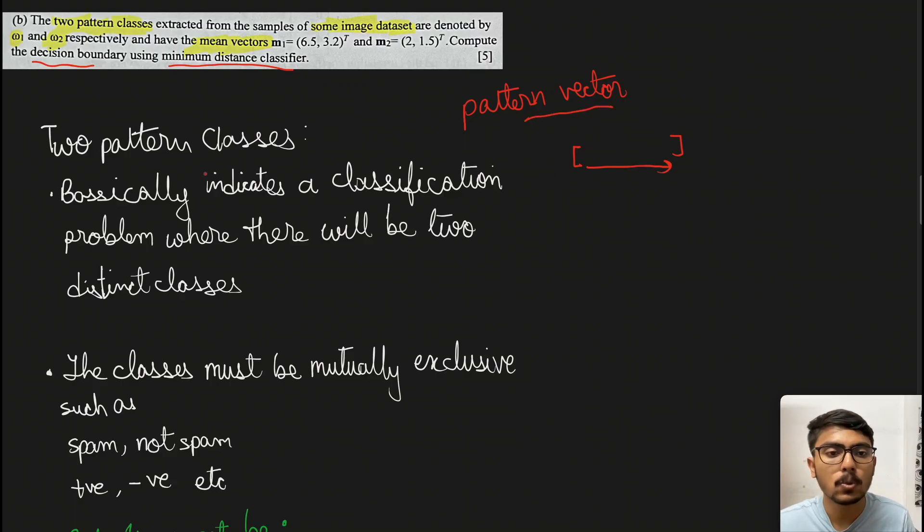We're given two pattern classes, which indicates a classification problem where there will be two distinct classes. Since we're given just two types of patterns, we can only classify into two classes. If there were three pattern classes, we'd classify each pattern vector into one of the three classes.